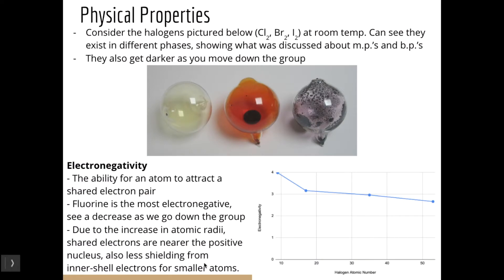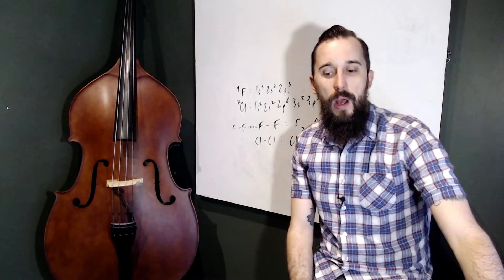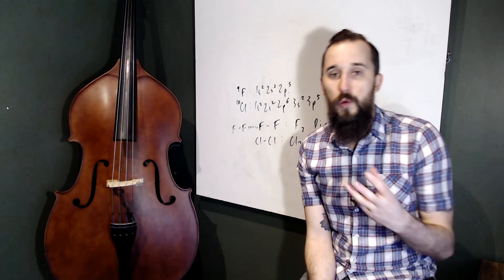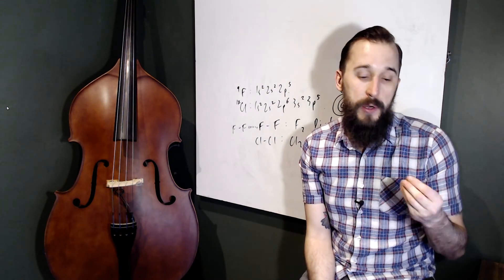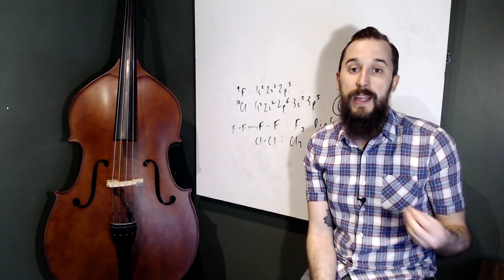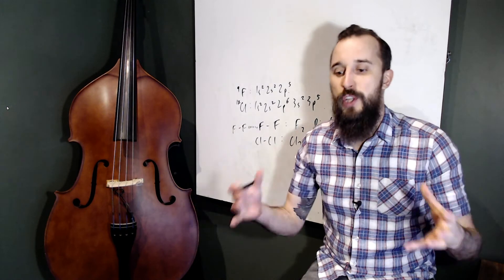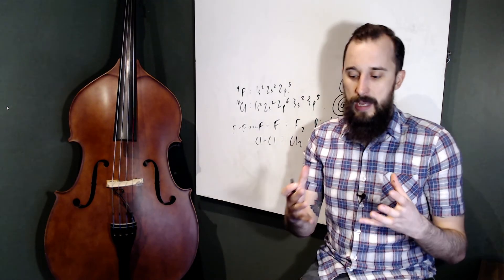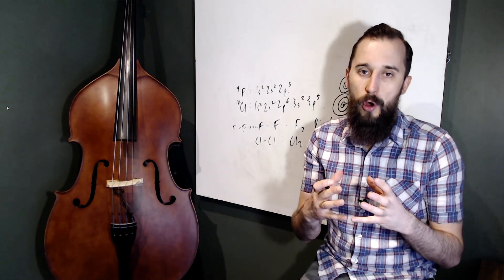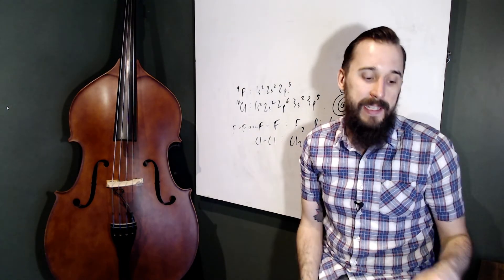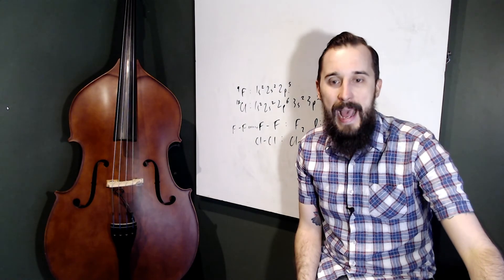We also have less shielding from inner shell electrons for smaller atoms. Even though elements further down the group have a larger nuclear charge, the number of electron shells has a much more dominant effect on the electronegativity of our halogens.